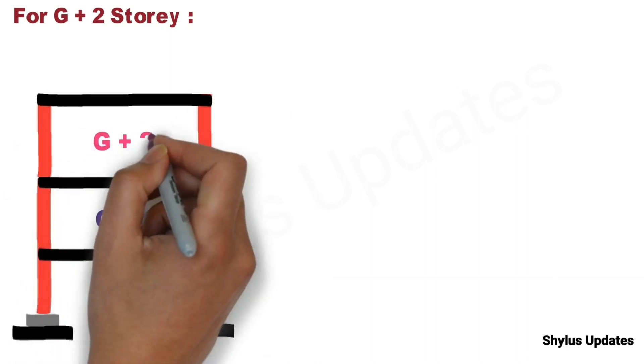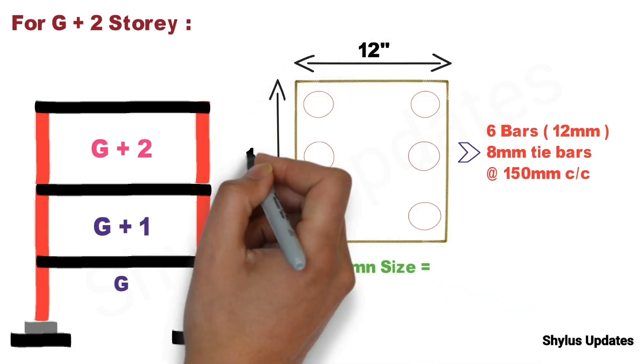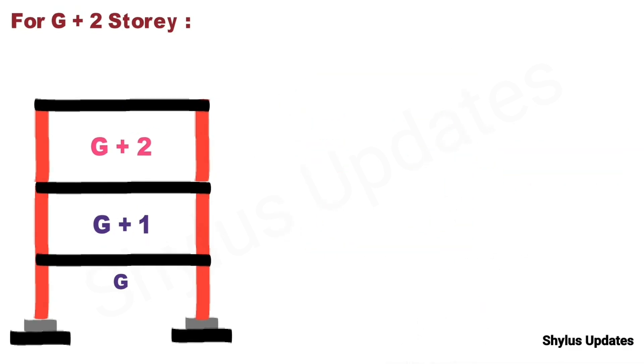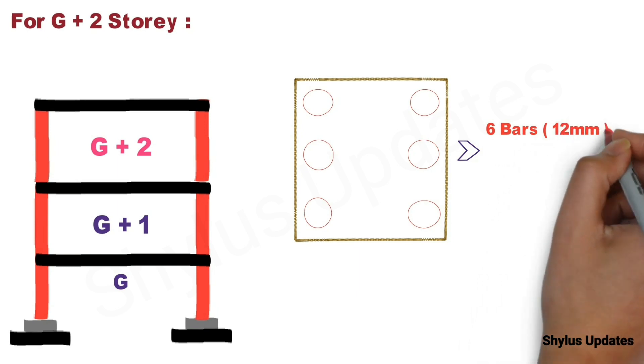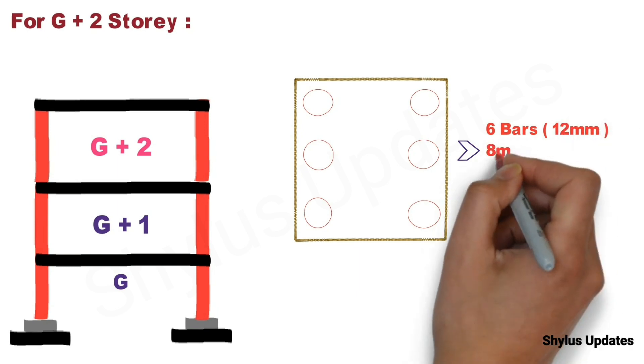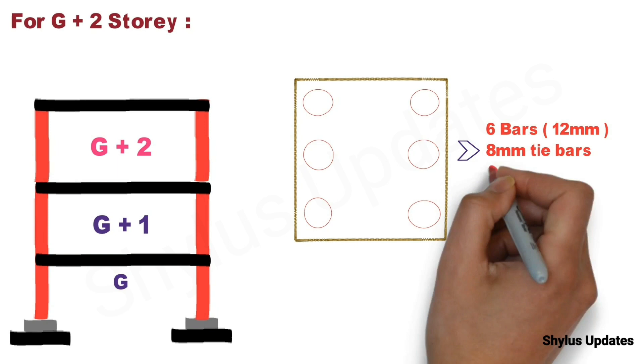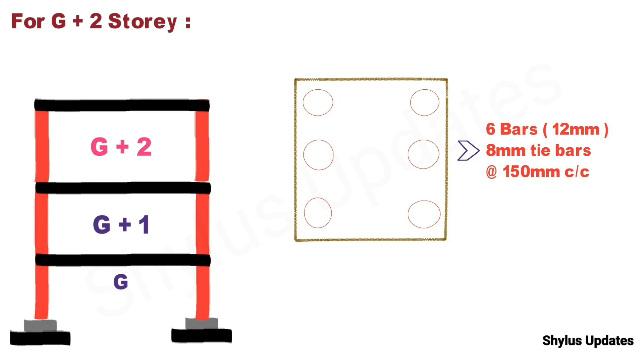For G plus 2 storey, the column size should be 12 inch into 12 inch or 0.3 meter into 0.3 meter. For this size of column we should provide minimum of 6 number of steel bars each 12 mm dia. This is minimum dia bar. And tie bars of size 8 mm spaced at 150 mm center to center distance.